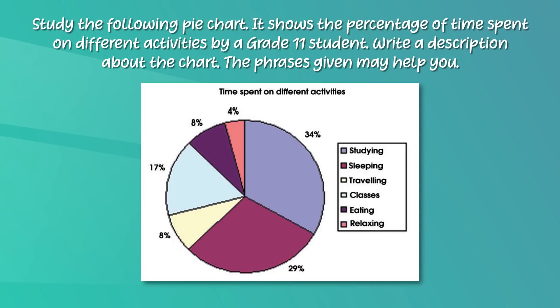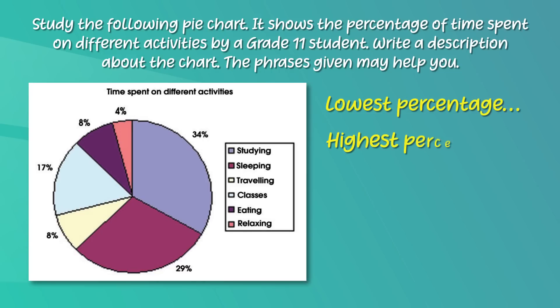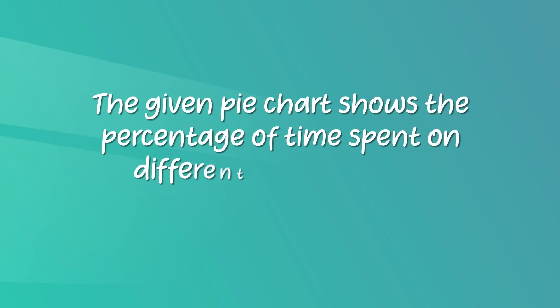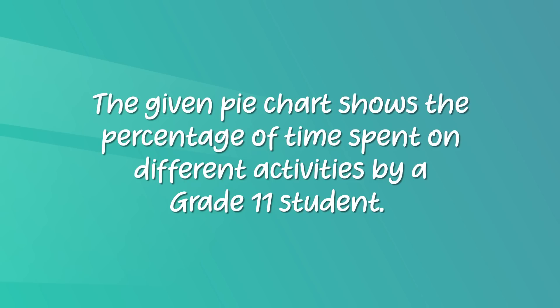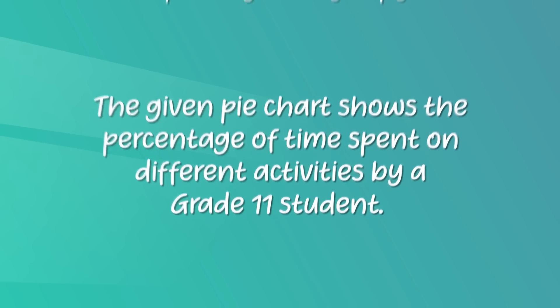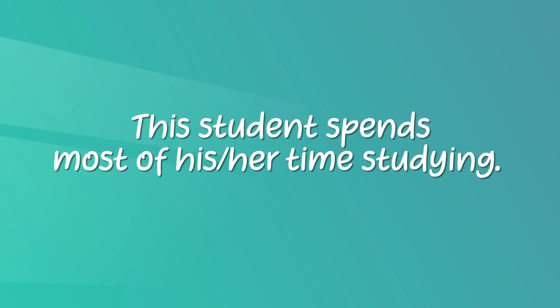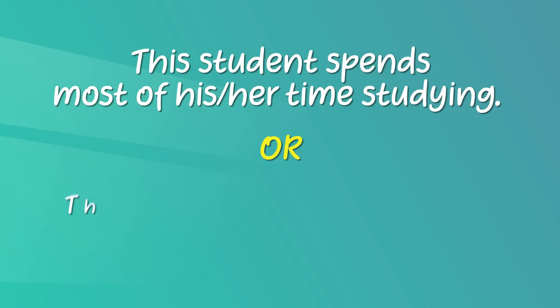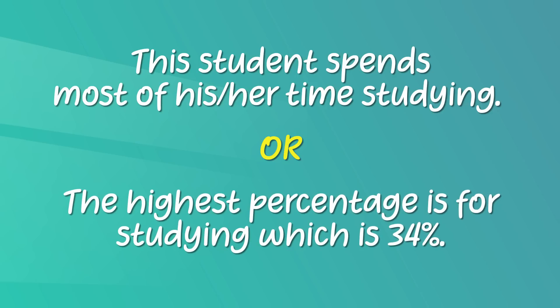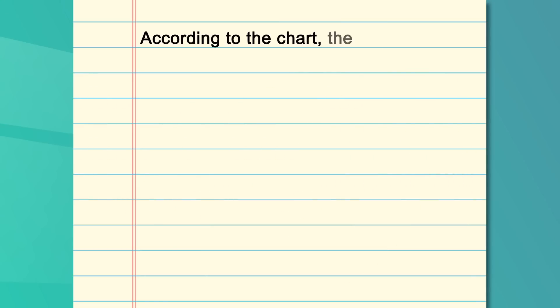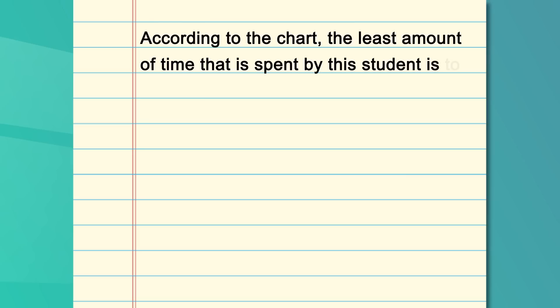The phrases given are: lowest percentage, highest percentage, equal amount of, more time, less time. You can start by explaining what the pie chart shows: 'The given pie chart shows the percentage of time spent on different activities by a Grade 11 student.' This student spends most of his or her time studying — the highest percentage is for studying, which is 34%. According to the chart, the least amount of time spent is to relax.